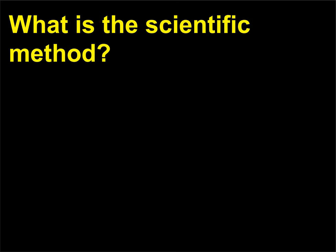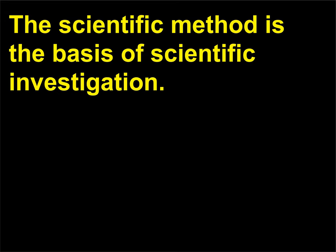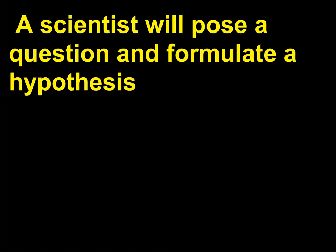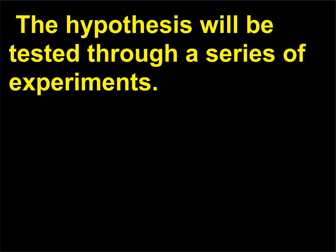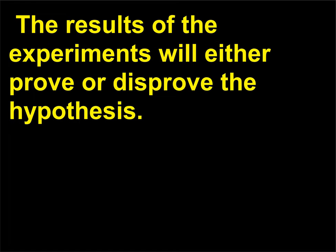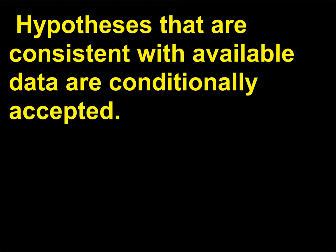What is the scientific method? The scientific method is the basis of scientific investigation. A scientist will pose a question and formulate a hypothesis as a potential explanation or answer to the question. The hypothesis will be tested through a series of experiments. The results of the experiments will either prove or disprove the hypothesis. Hypotheses that are consistent with available data are conditionally accepted.